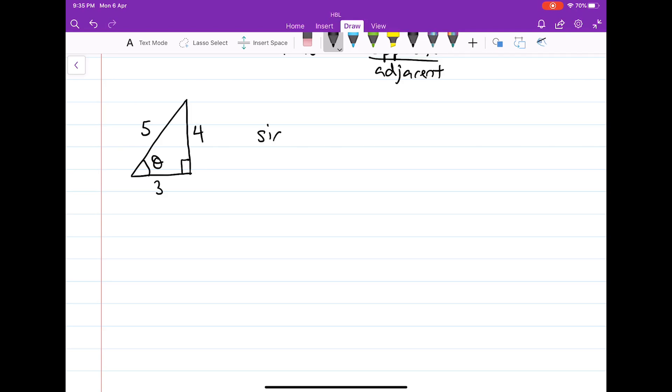Sin theta is the opposite length over the hypotenuse: opposite over hypotenuse. Cosine theta is the adjacent length over the hypotenuse. And tangent theta is given by the opposite length over the adjacent length.